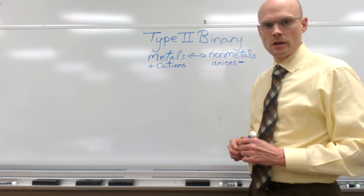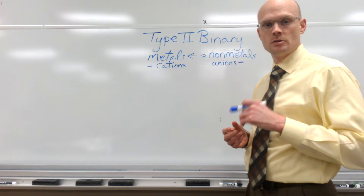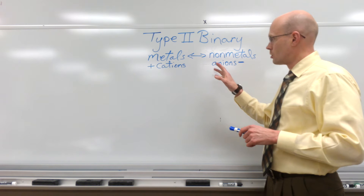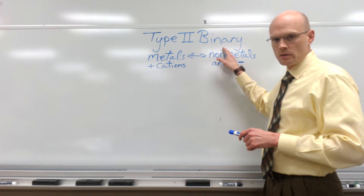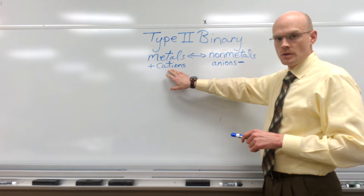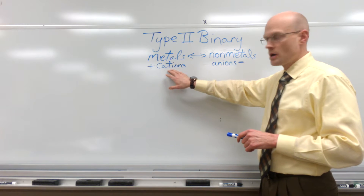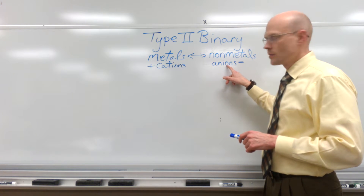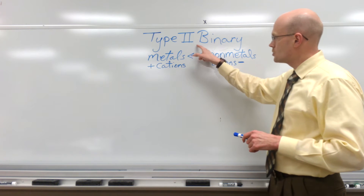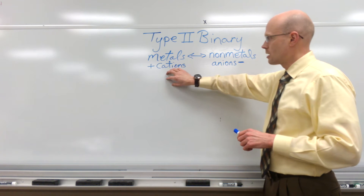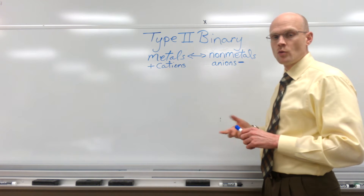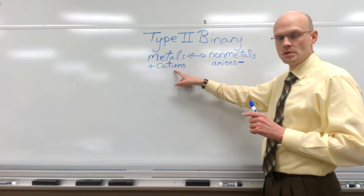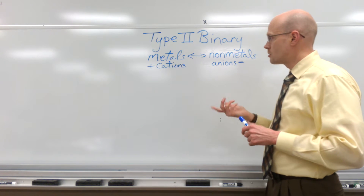Let's look at Type 2 binary compounds — how to name them and how to determine the formula from the compound's name. In Type 2 binary compounds, we're looking at metals bonding with nonmetals. Metals become cations when they bond — they lose valence electrons and take a positive charge. Nonmetals are anions; they gain electrons and obtain a negative charge. Type 2 uses transitional metals that have more than one common charge on their ions, whereas Type 1 uses metals with only one particular charge.